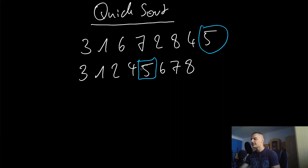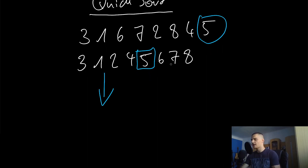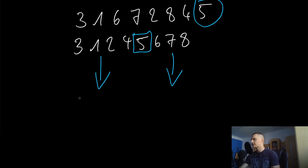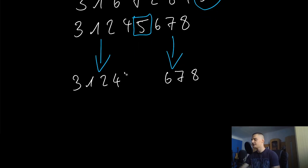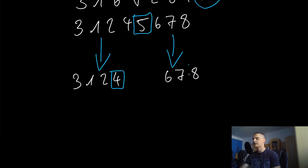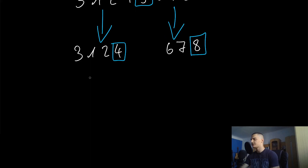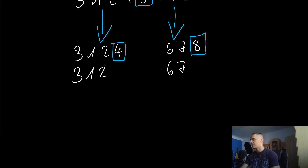The pivot element is now already in the right place, since all larger elements are to its right and all smaller elements are to its left. What we do then is divide in order to conquer later — we split into two lists: 3, 1, 2, 4 and 6, 7, 8. Then we recursively repeat the process. We pick the pivot element again — the last one — and arrange all elements. In this case it's already correct: 3, 1, 2 and 6, 7 are already where they belong.